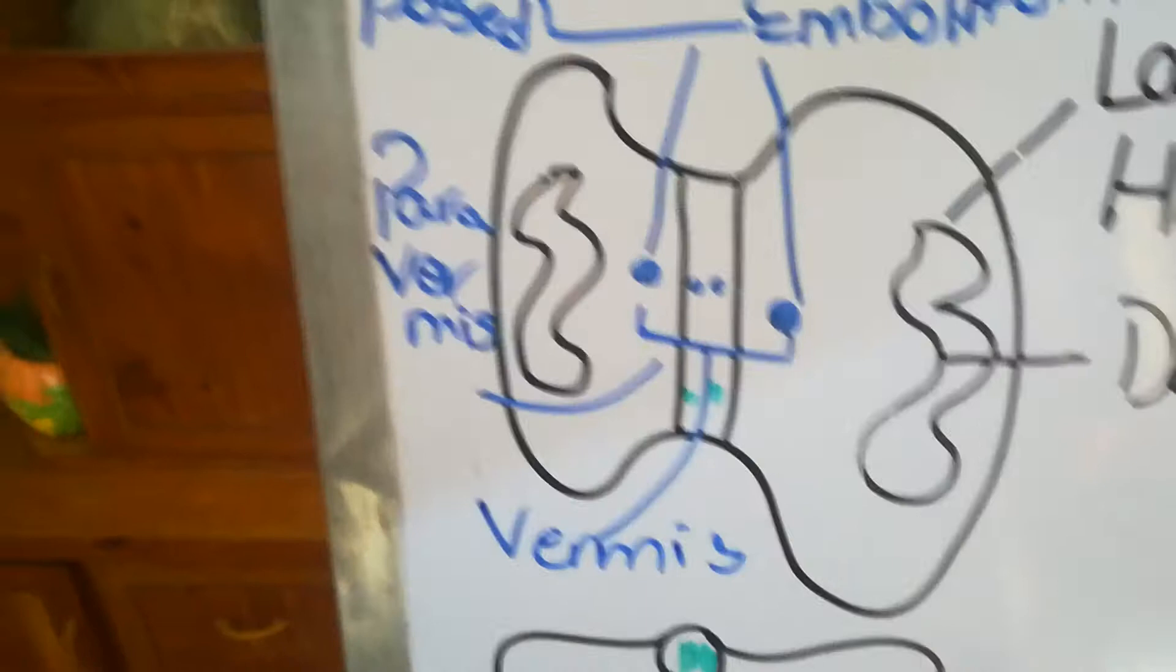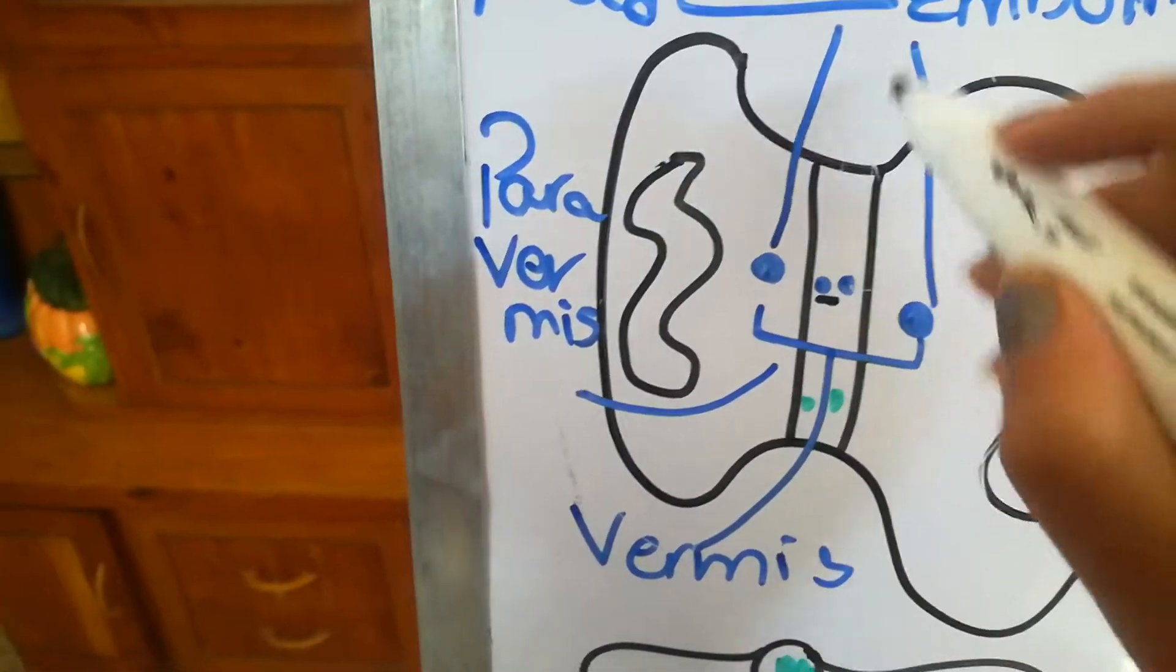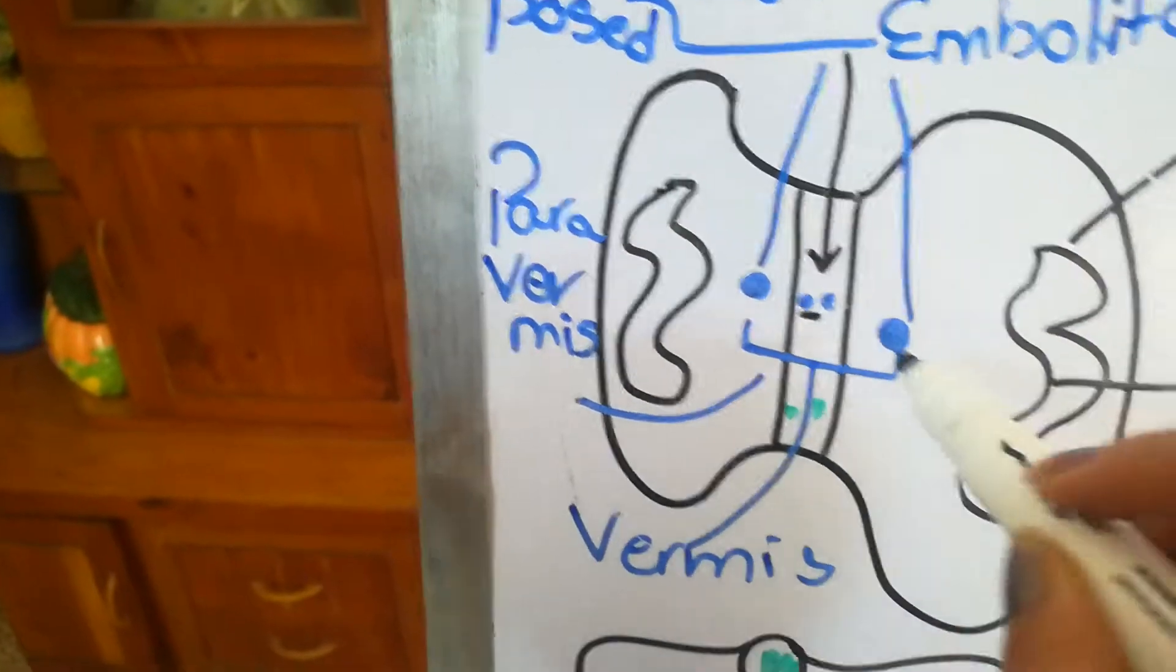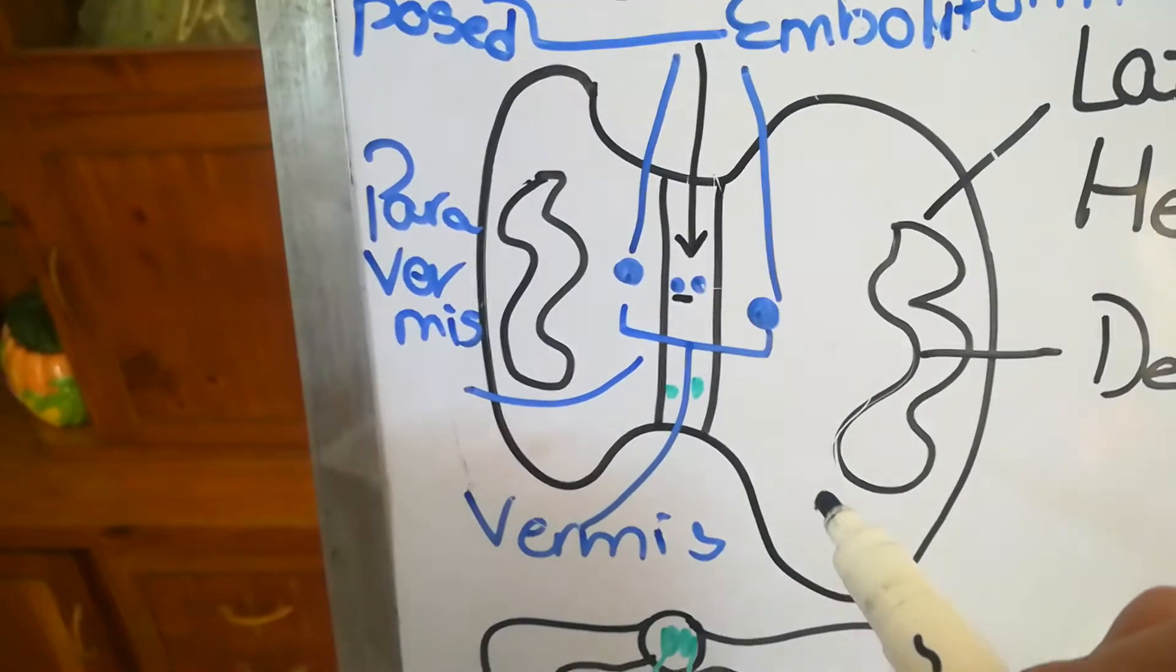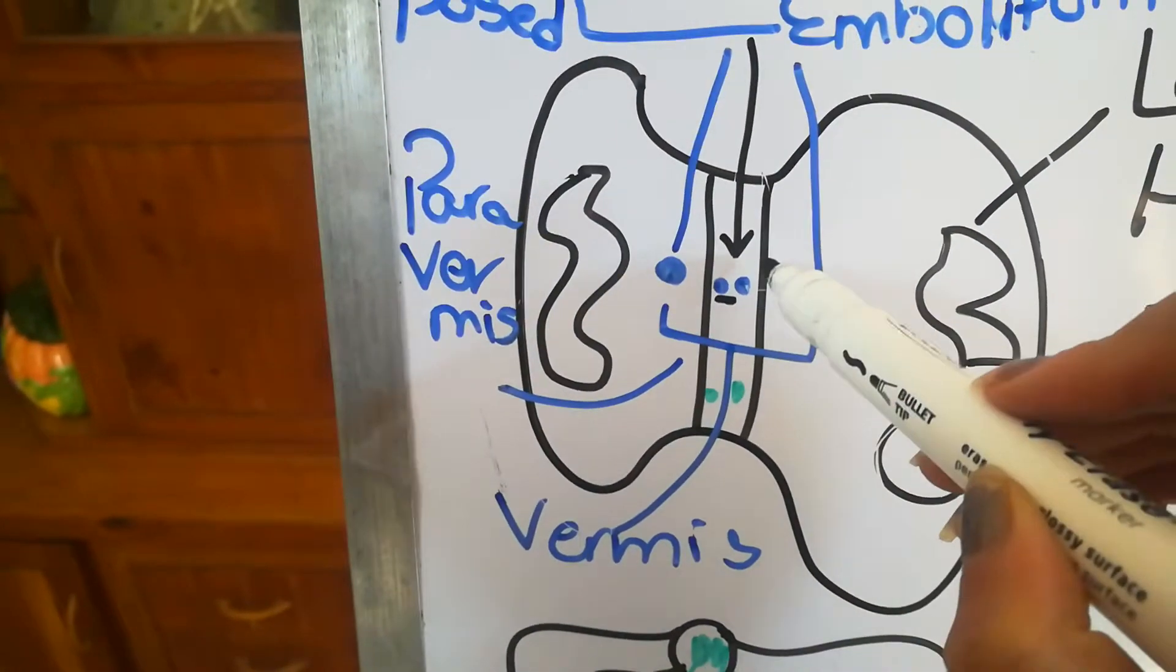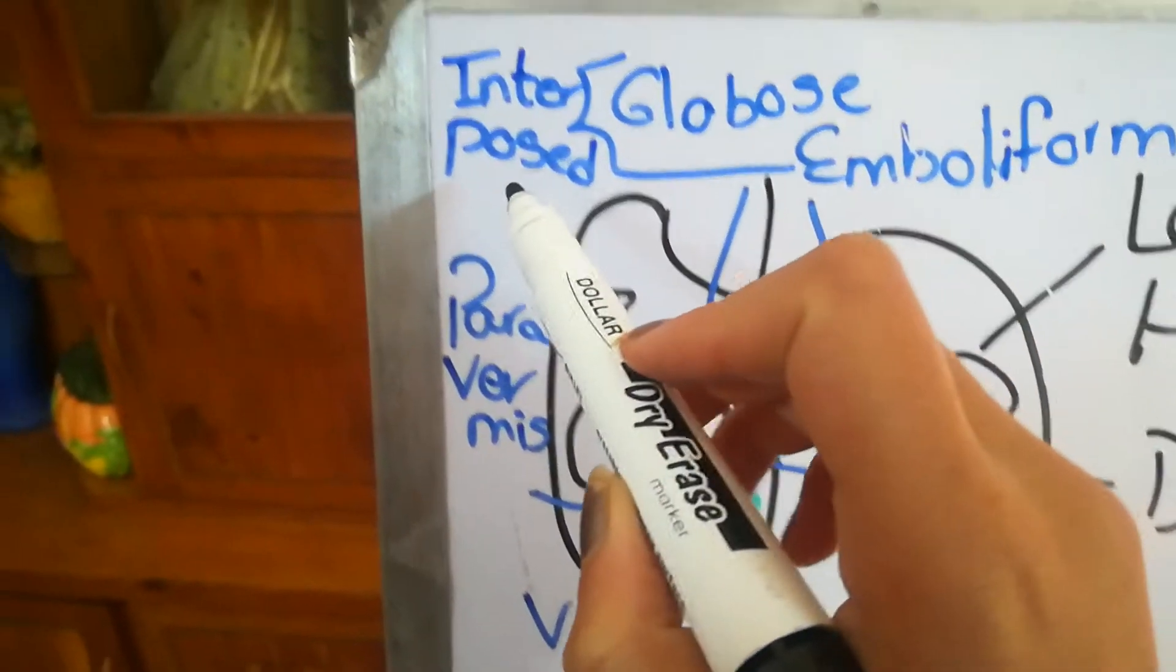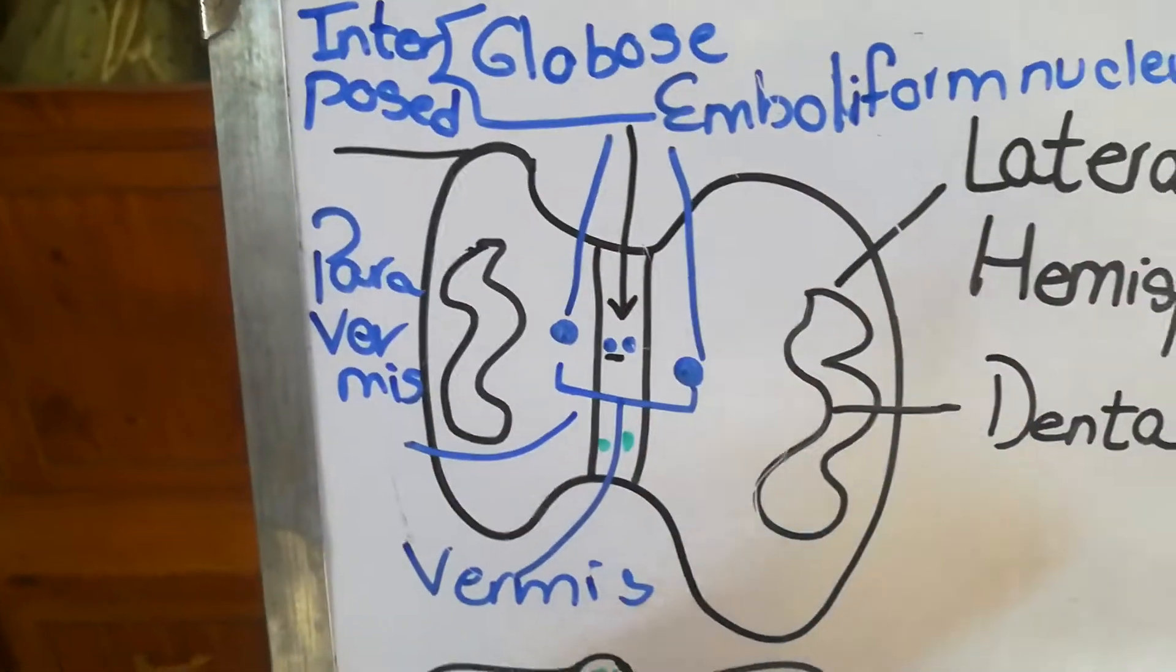Where are they located? These small lobes are the globose nucleus, and those present in front of it are the emboliform nucleus. The emboliform nucleus together with the globose nucleus form what is known as the interposed nucleus.